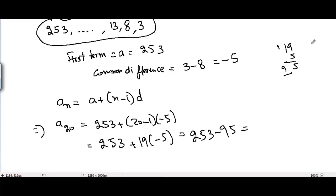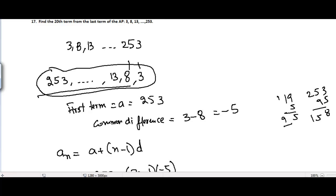So now 253 minus 95 here, it's 158. So the 20th term of this AP is equal to 158, which is equal to the 20th term from the last term of this AP.